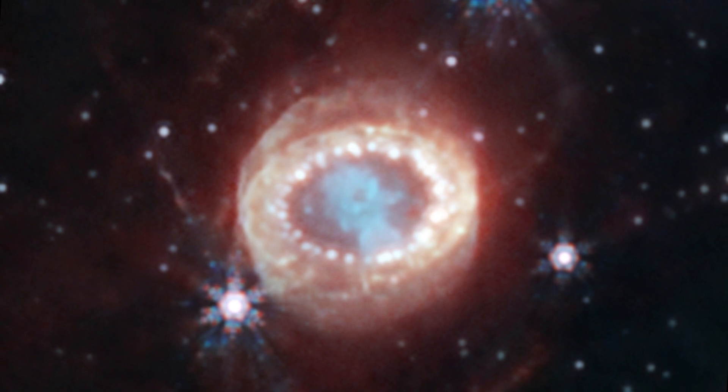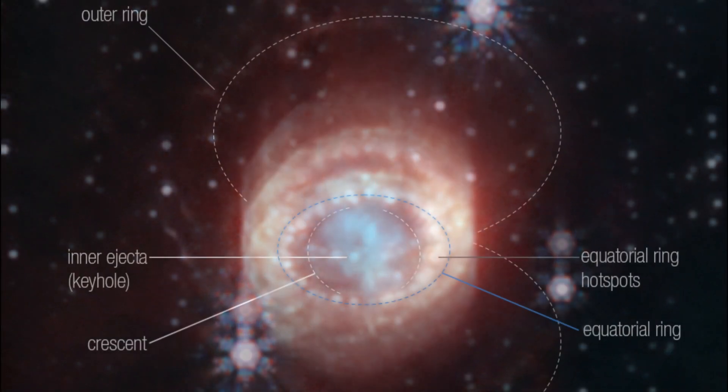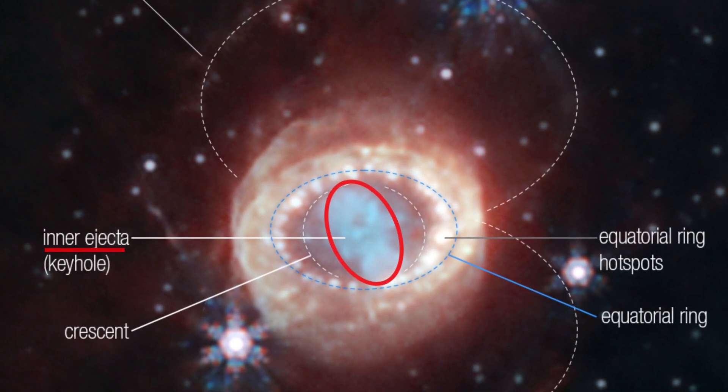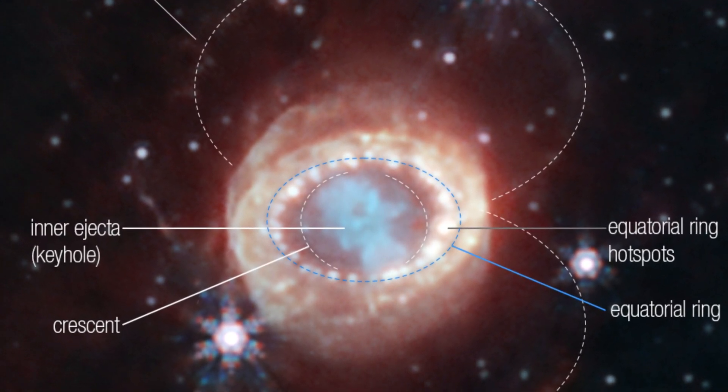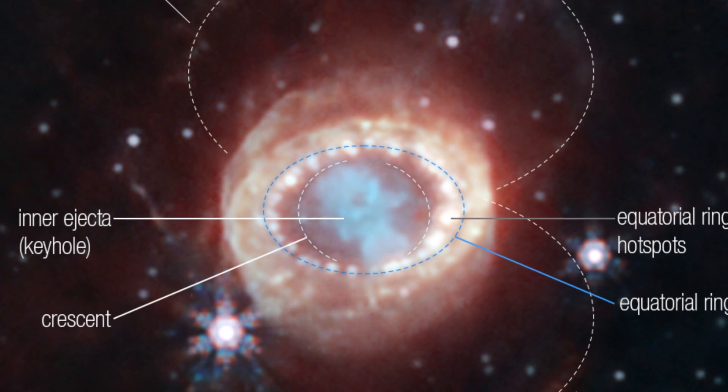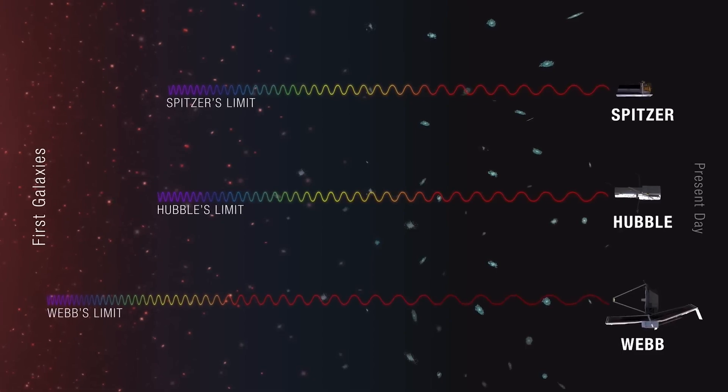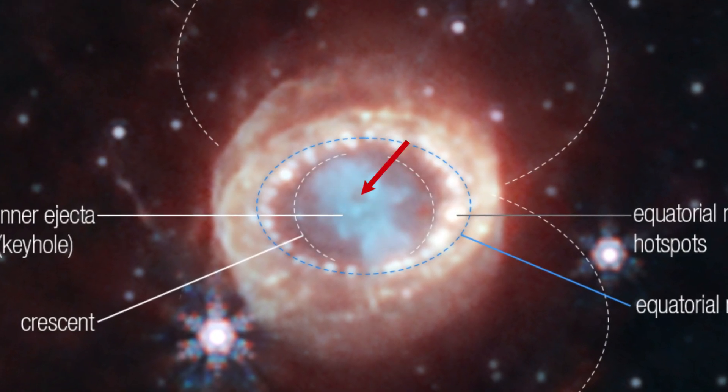This new image has revealed a wealth of new detail. The image shows a central structure of inner ejecta shaped like a keyhole. This structure is packed with clumpy gas and dust ejected by the supernova explosion. The dust is so dense that even the near-infrared light that Webb can detect cannot penetrate it, creating the dark hole in the keyhole.